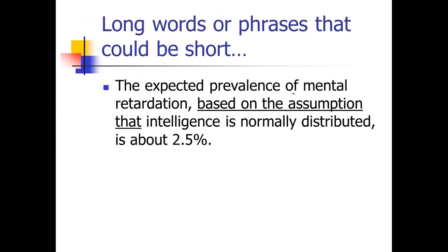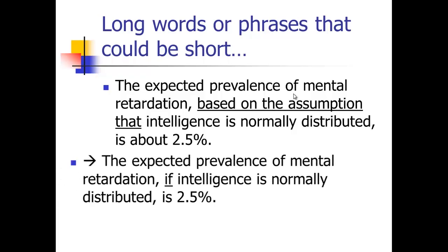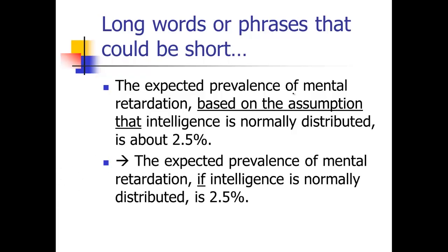So here's an example of a sentence. It's got a little bit of a wordy phrase in it. The expected prevalence of mental retardation based on the assumption that intelligence is normally distributed is about 2.5%. So based on the assumption that. What's a short way to say based on the assumption that? Well, how about just if the expected prevalence of mental retardation if intelligence is normally distributed is 2.5%.